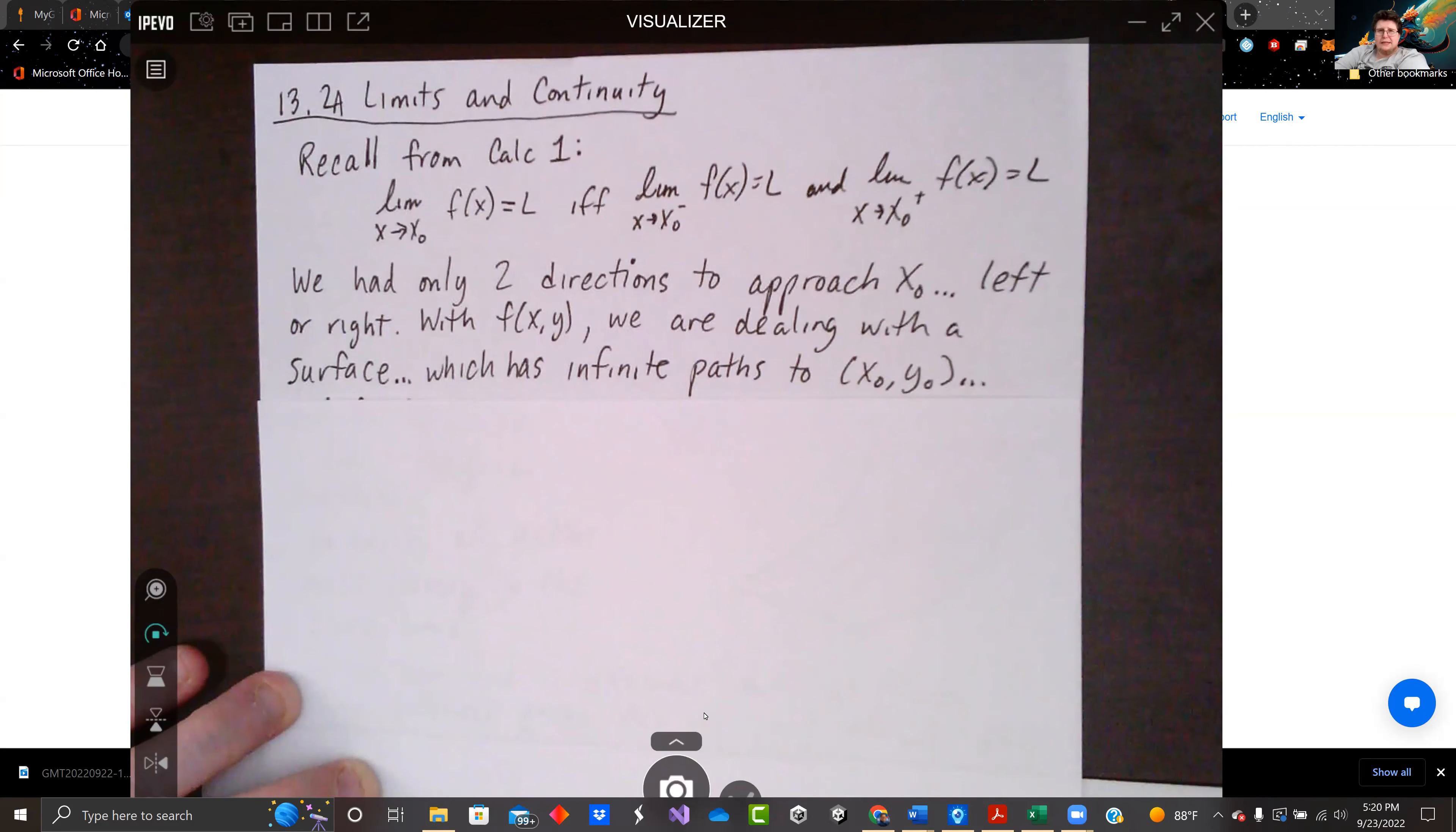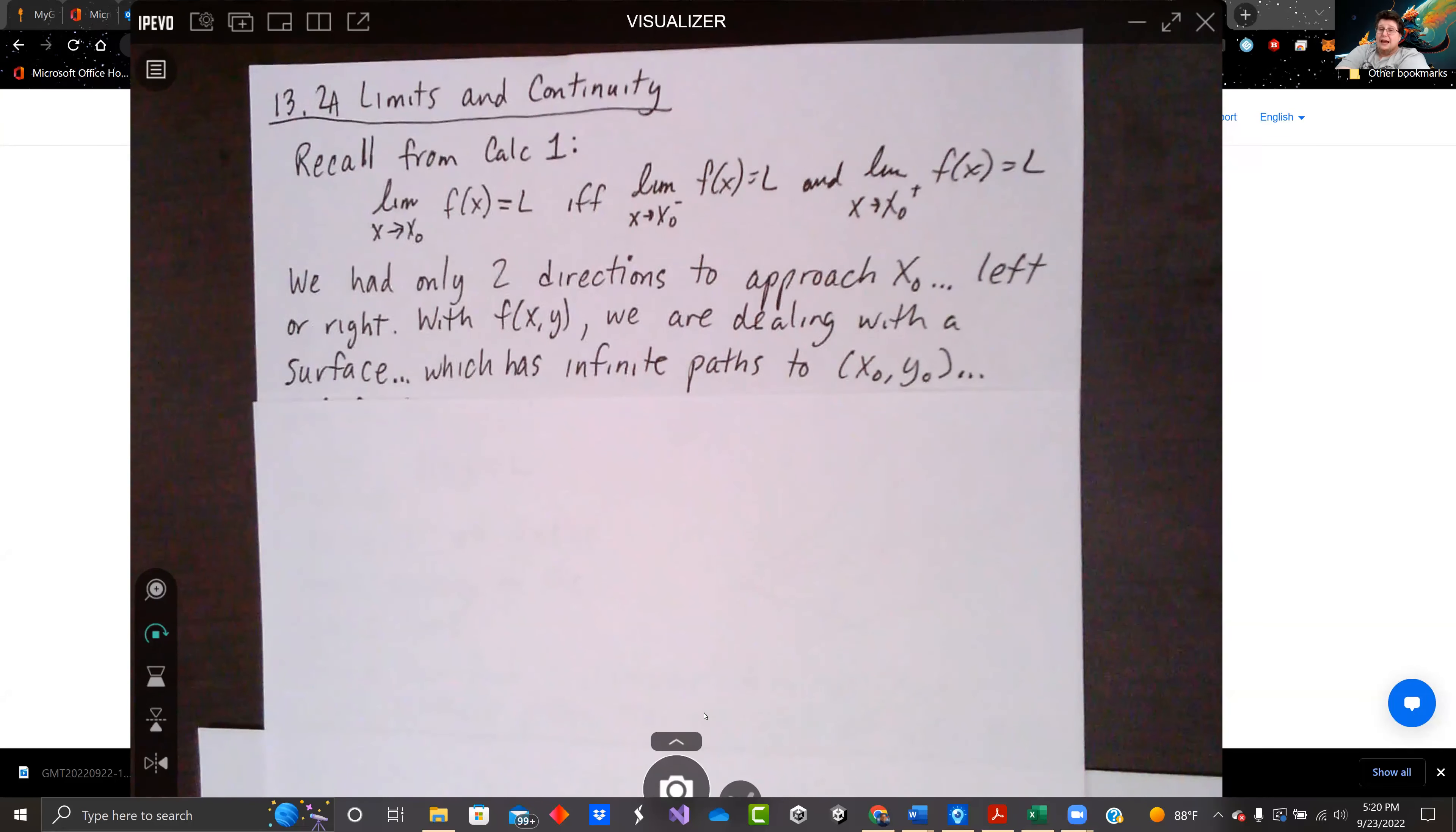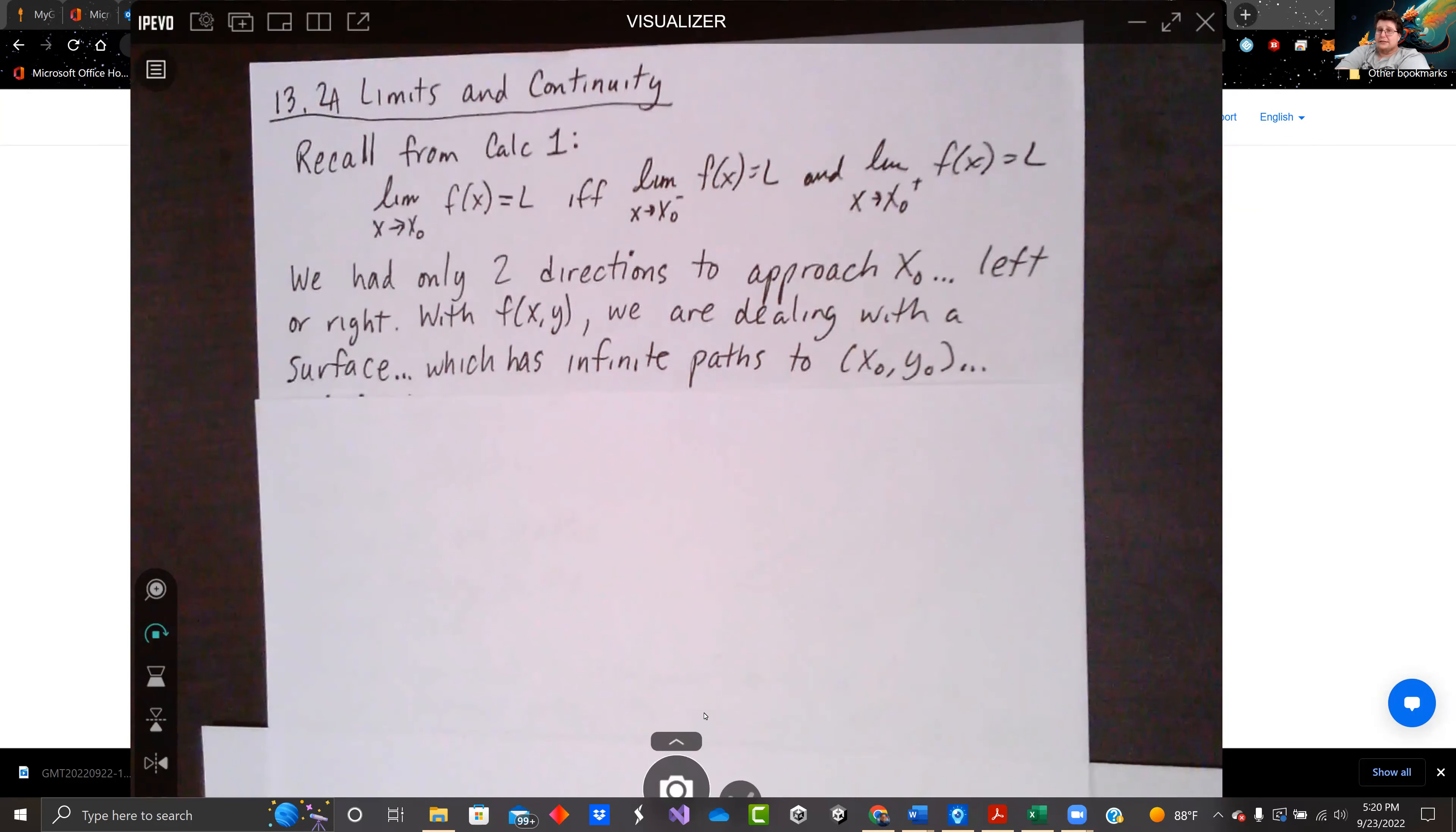13.2 is on limits and continuity for multivariable functions. So recall from Calculus 1, when we did the limit as x approached x0 for f(x)=L, that was only true if and only if the limit as x approached x0 from the left existed, and the limit as x approached x0 from the right or positive side existed, and were both equal to L. We only had two directions to approach x0 from, the left or the right.